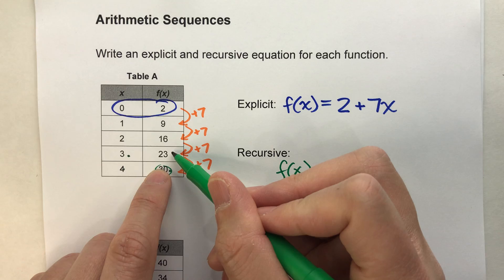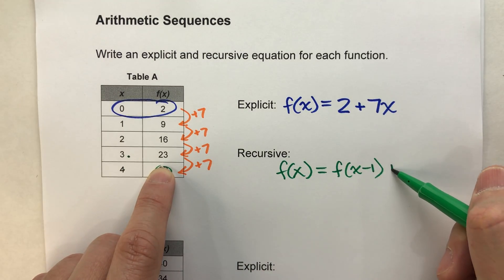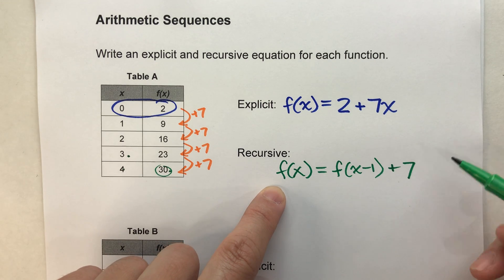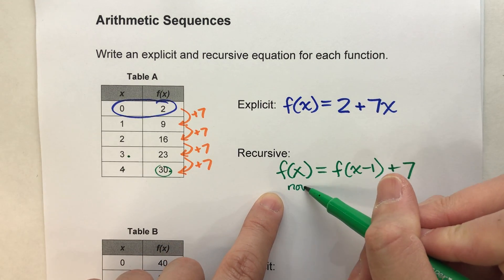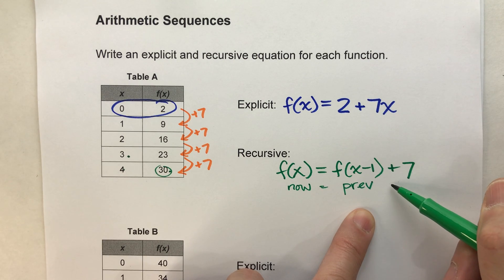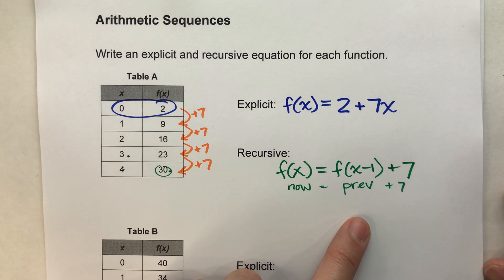Now, once we know the previous one, we simply add 7 to it. So this is a fancy way of saying that the current value is equal to the previous value plus 7.